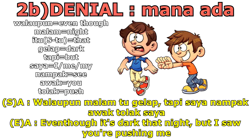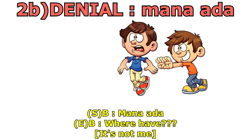Moving to the second denial example: someone says "walaupun malam tu gelap, tapi saya nampak awak tolak saya" — meaning "even though it was dark that night, I saw you were pushing me." You try to deny it and say "mana ada," meaning "it's not me" — not "where has."